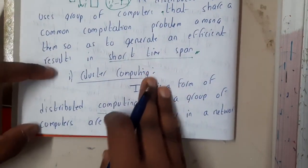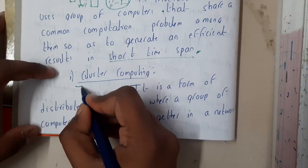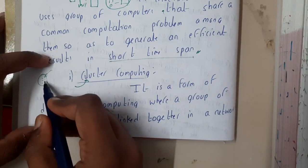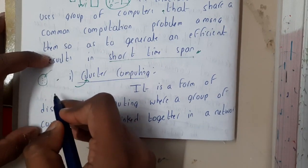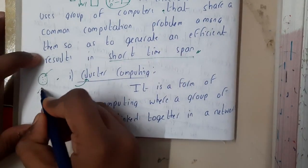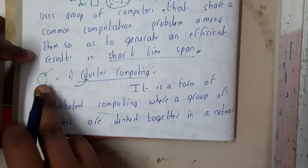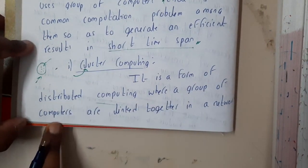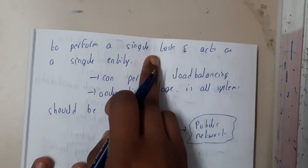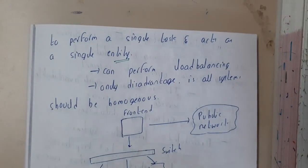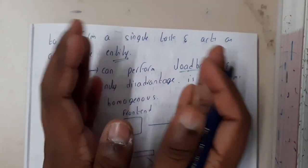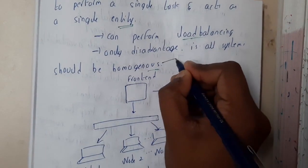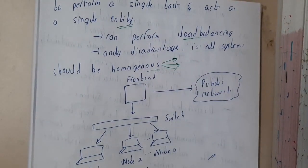The first type is cluster computing. A cluster is a group where members share some common characteristic but are completely different from others outside the group. It is a form of distributed computing where a group of computers are linked together in a network to perform a single task and act as a single system. They can perform load balancing by dividing the load. The only disadvantage is that they must be homogeneous — same operating system, same hardware type.